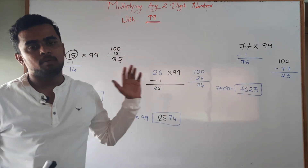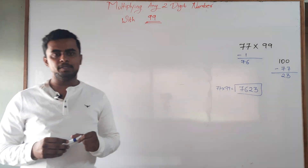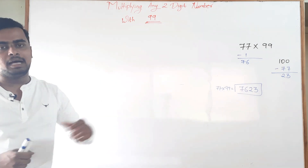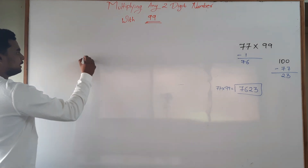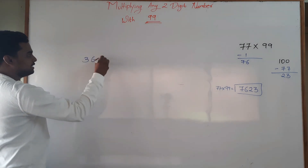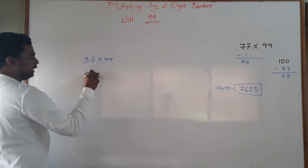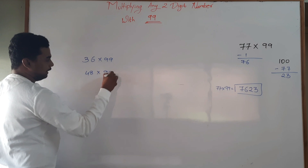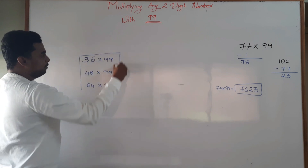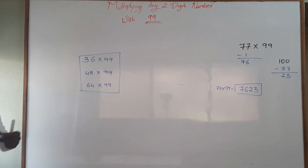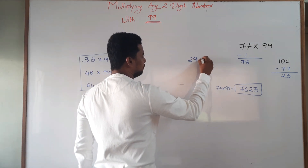This is the trick for multiplication of any two-digit number with 99. We will solve a few more numbers and I will ask you all to solve a few numbers on your own and check your answers at the end of the video. So we will take 36 multiplied by 99, then you will solve 48 multiplied by 99, and then 64 multiplied by 99 — I will show you those answers at the end. Now let us take 29 multiplied by 99.